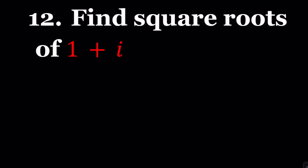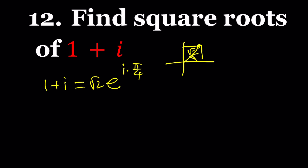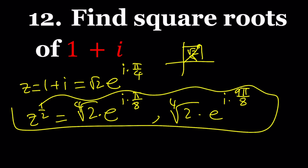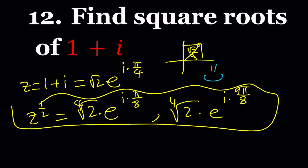Let's do number 12 and then take a break for part 2 later. To find the square roots of 1 plus i: write 1 plus i in polar form — it's a 45-45 triangle, so theta is π over 4 and the modulus is square root of 2. So 1 plus i equals square root of 2 times e to the power i π over 4. The square roots are the 4th root of 2 times e to the power i π over 8, and the 4th root of 2 times e to the power i times 9π over 8. Thank you for watching — please comment, like, and subscribe. See you in part 2!